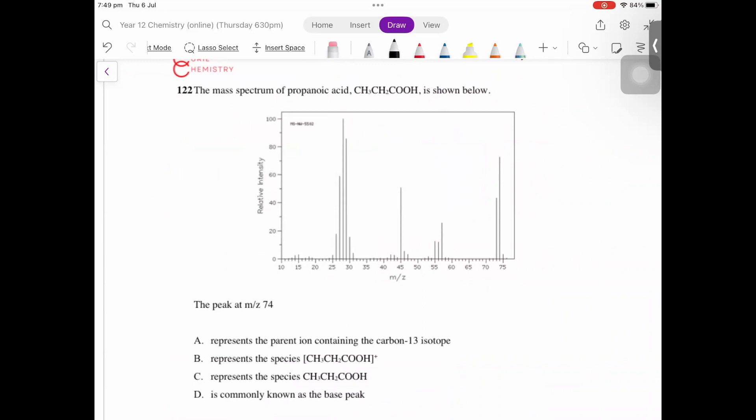The mass spectrum of propanoic acid is shown below and it's asking you which statement is true about the peak at mass over Z 74.